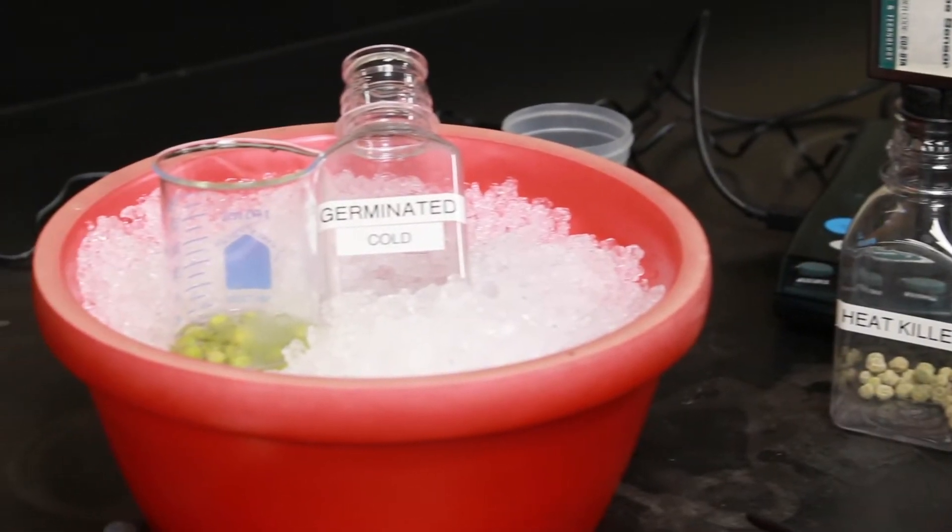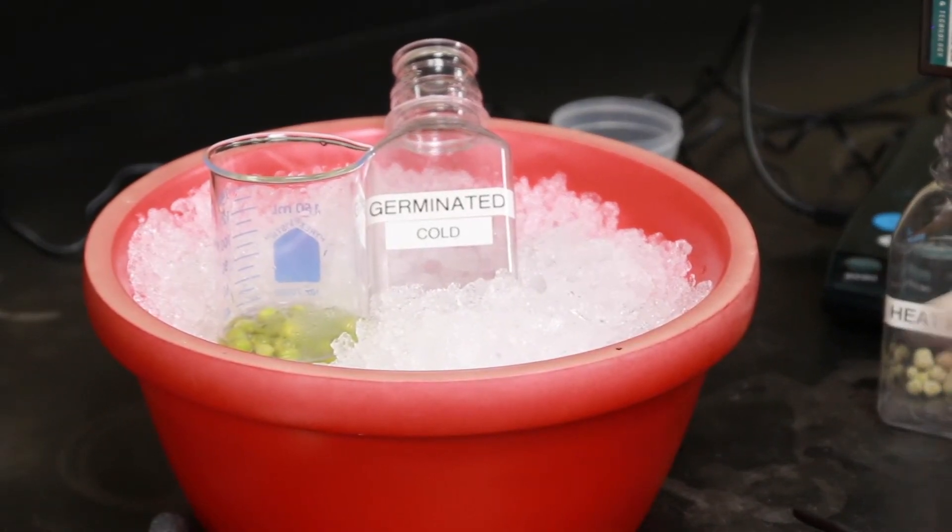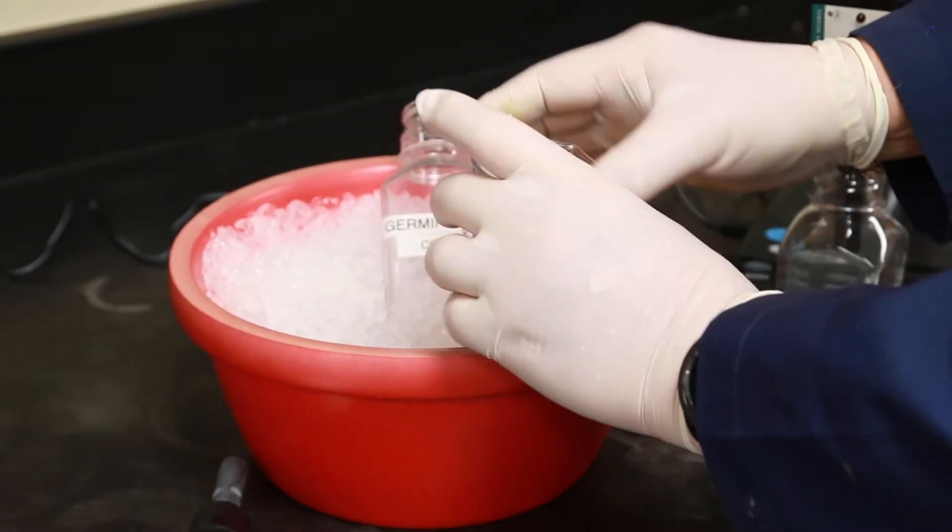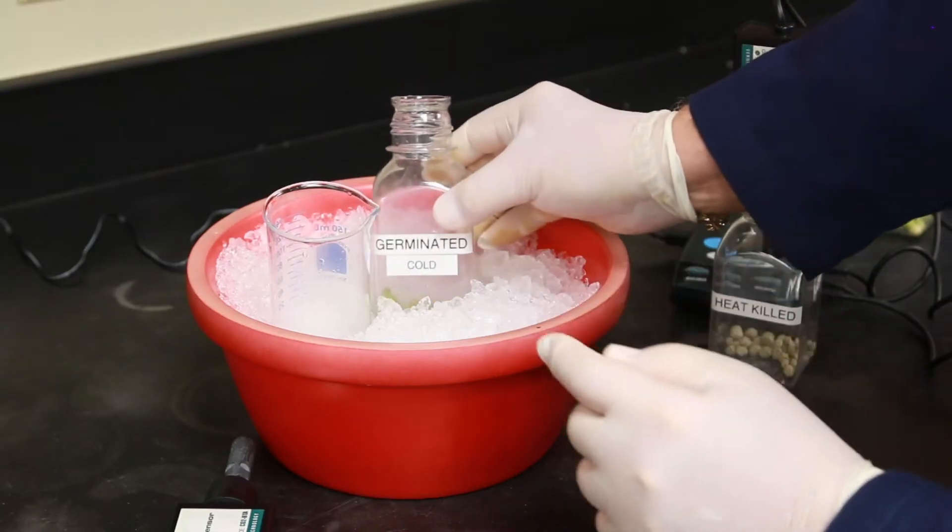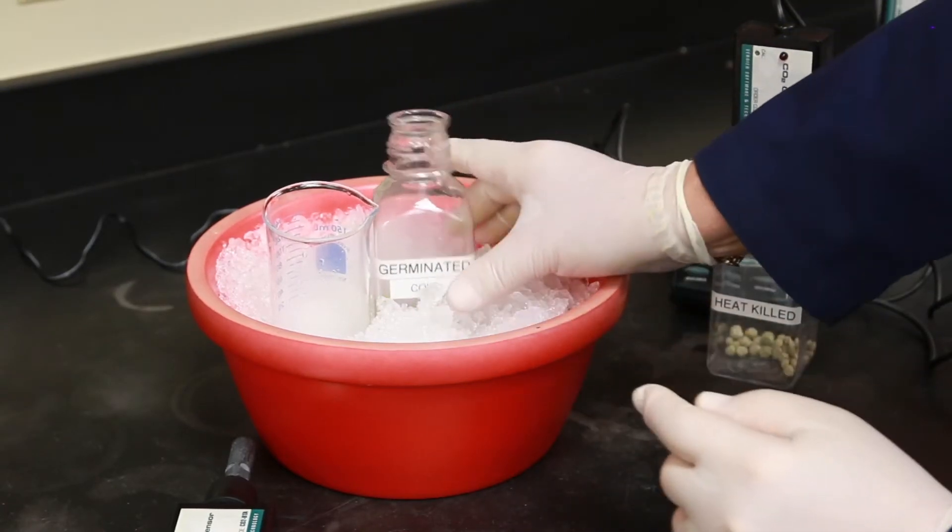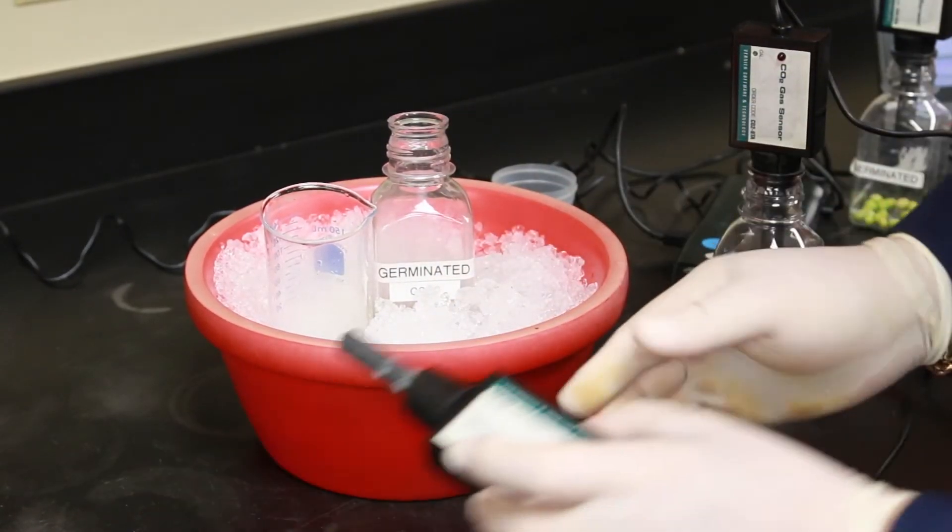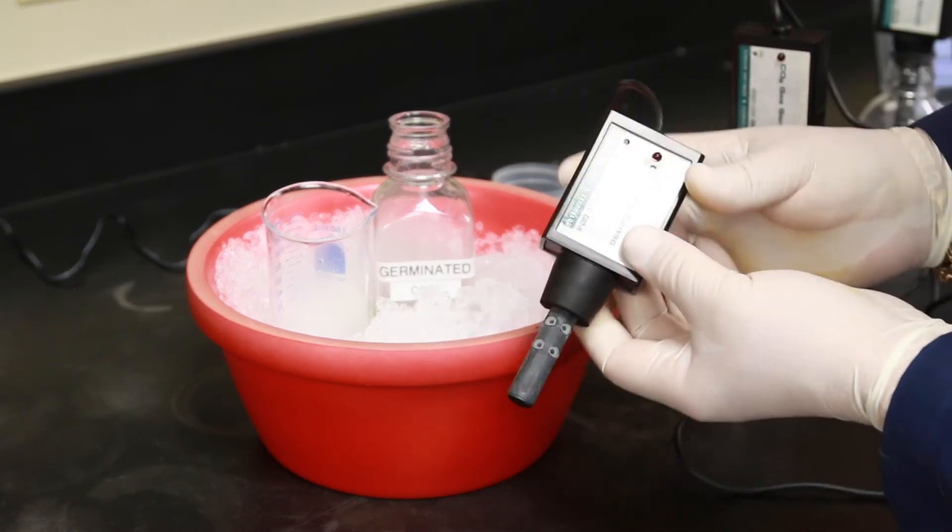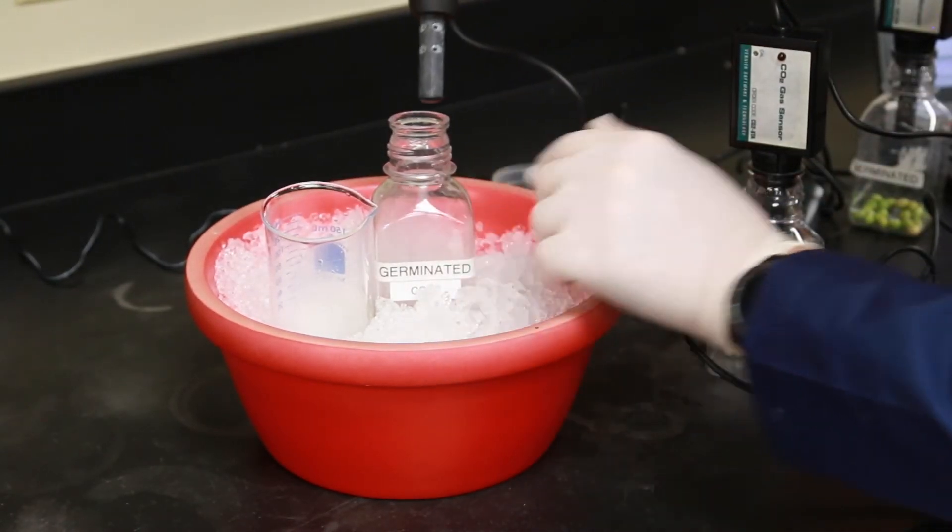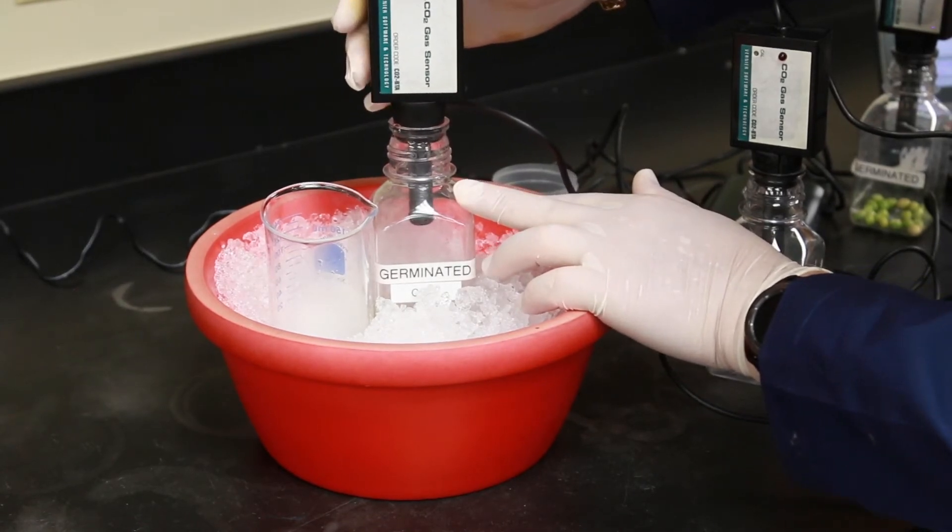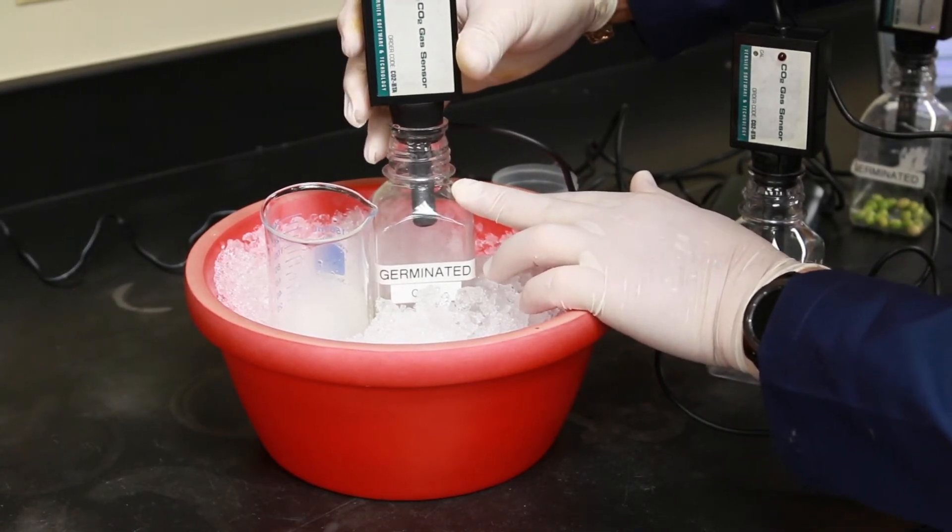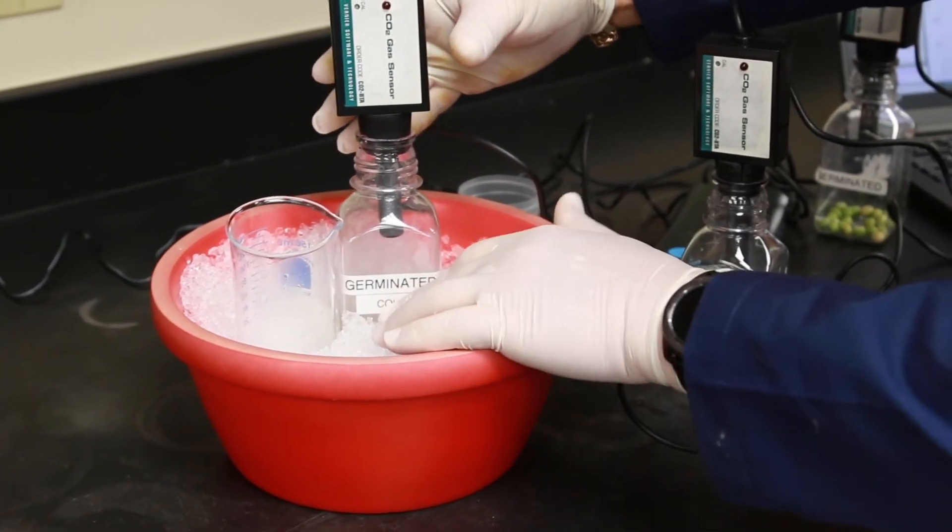Now we're on to the cold peas, these are germinated peas that have been placed on ice for about one hour. We don't want the peas to be frozen, we simply want them to be extremely cold. Once the peas are added to their own plastic flask we do put the flask back on ice and add the next CO2 sensor. Again we'll have to allow this flask to equilibrate for about one to two minutes before collecting our data.